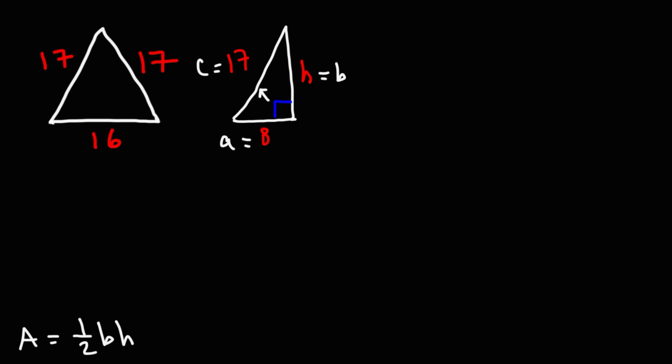Now, let's redraw the original triangle, but only with the relevant parts that we need. So, the base is still 16, but the height, we know the height to be 15. This is the 8, 15, 17 triangle. So, now we can calculate the area.